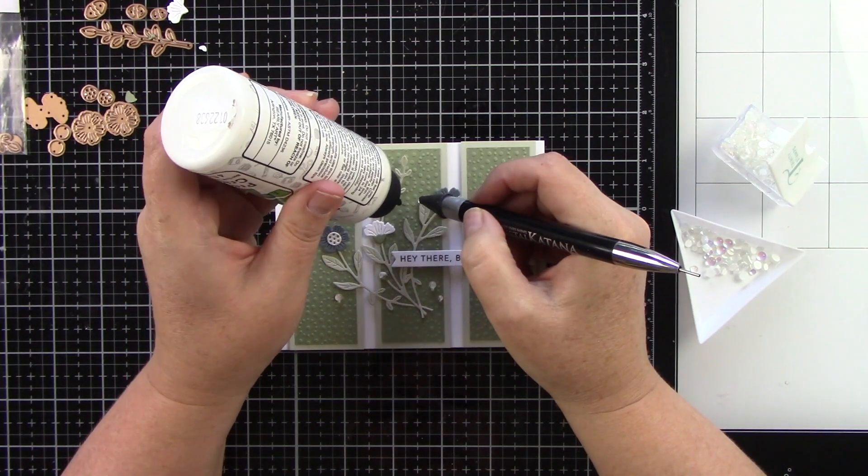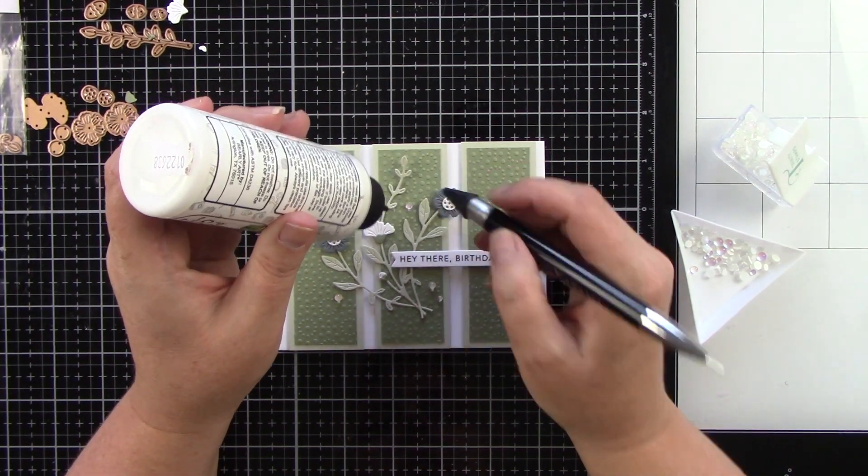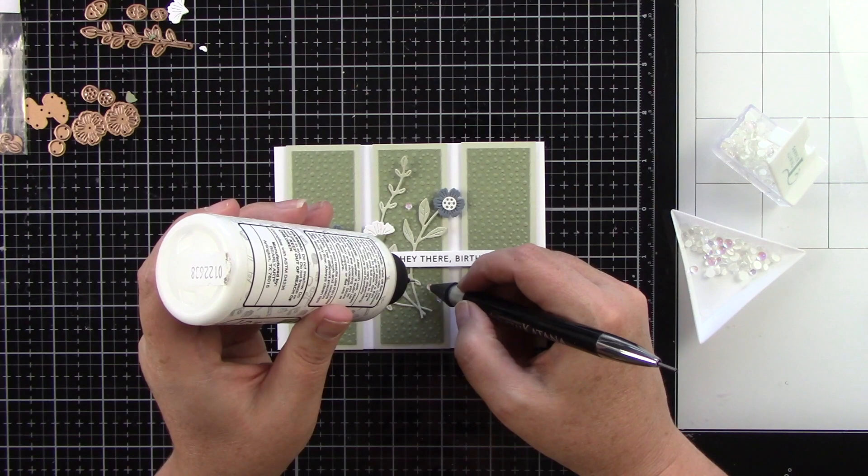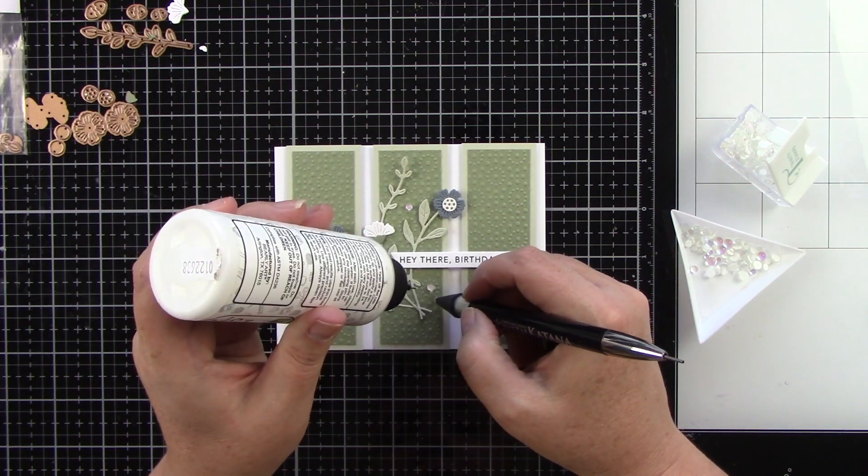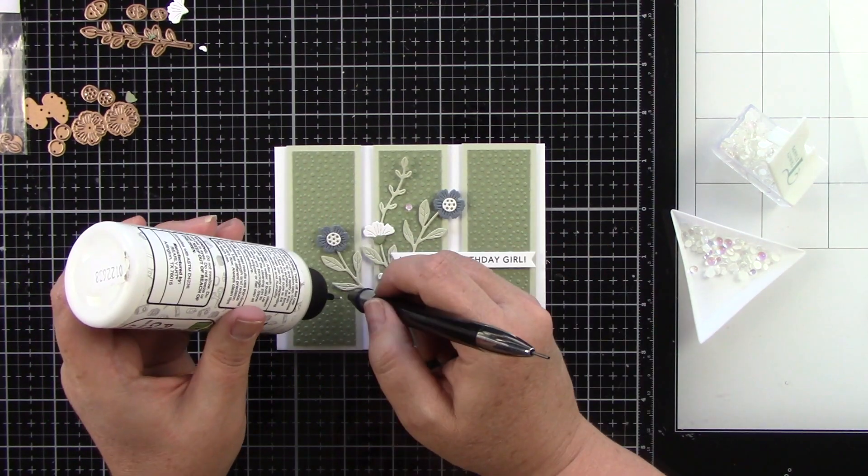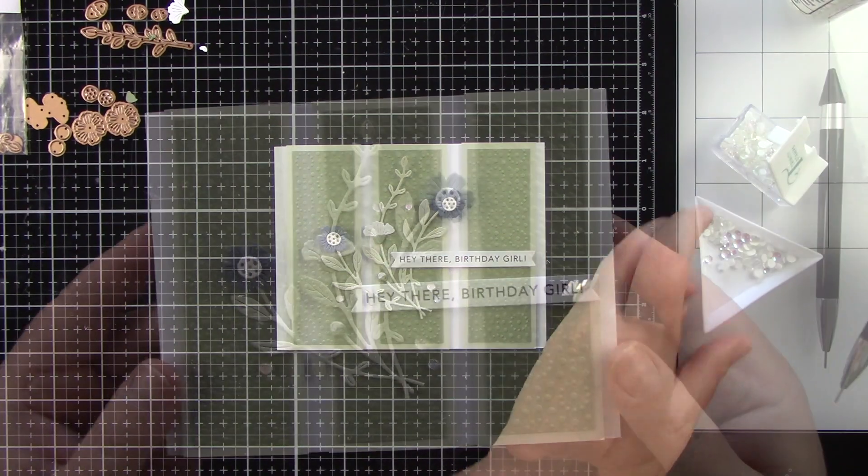Then I'm adding some Trinity Stamps Crystal Ball Dew Drop Baubles. Just to kind of add a little something extra and finish off the card I'm using my embellishment wand and some Barely Art glue.